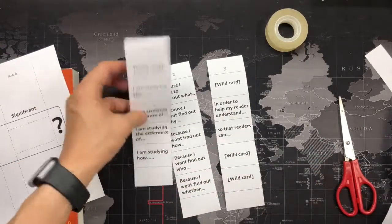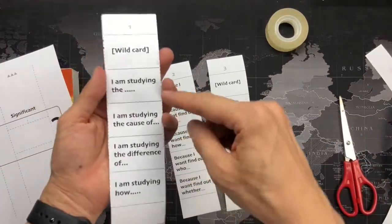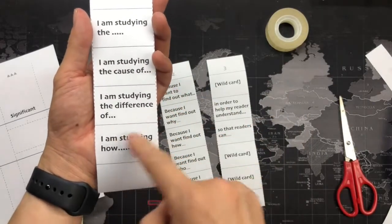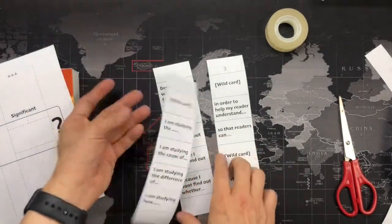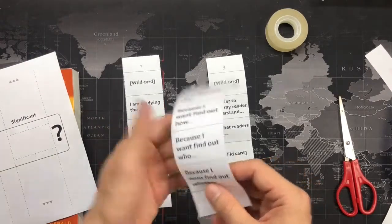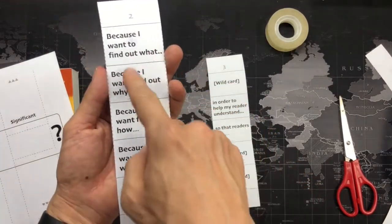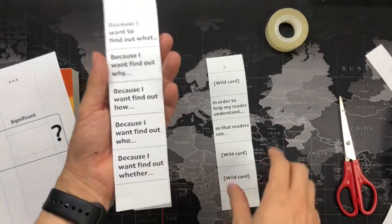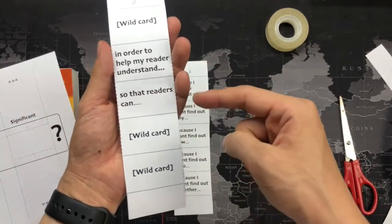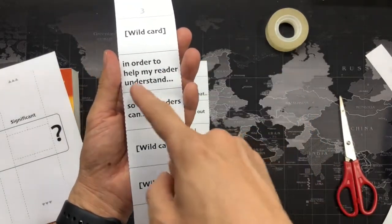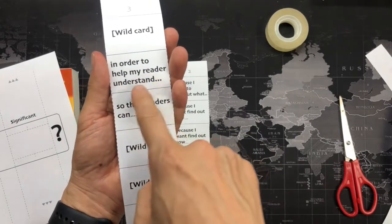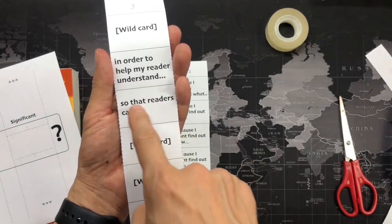Okay, so now you can see that this one says I am studying the course or different or how, and then you need to fill in later because I want to find out what or find out why and how. And the last one, you can see that there are only two. One is for the peer research, like to help my leader understand so that leader can.